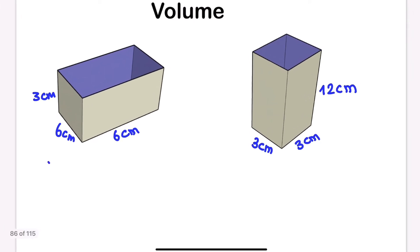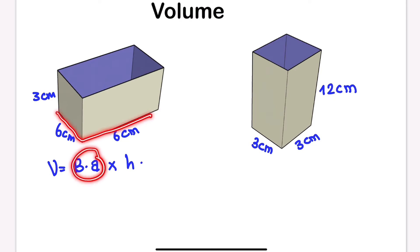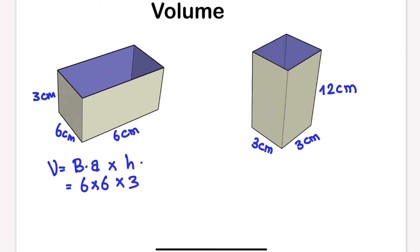The formula for volume of a prism is base area times height. For the first cuboid, the base is 6 cm × 6 cm, so the base area is 36, and the height is 3. So the volume is 36 × 3 = 108 cm³. The volume is always in cubic units.